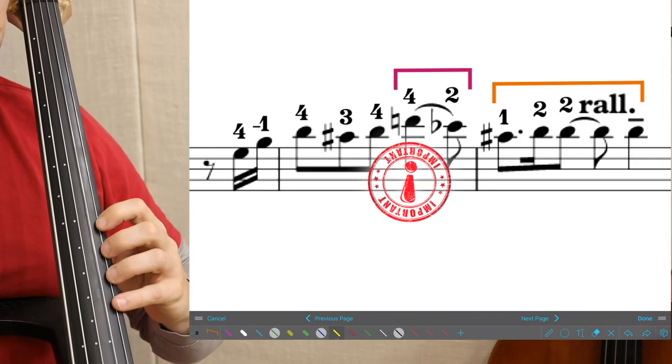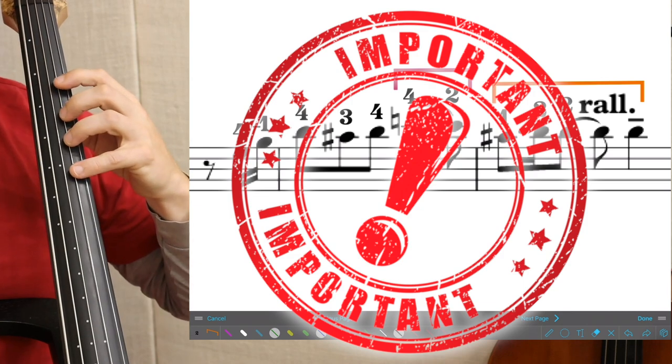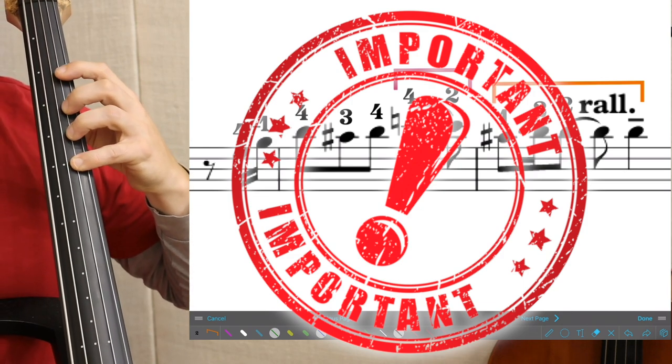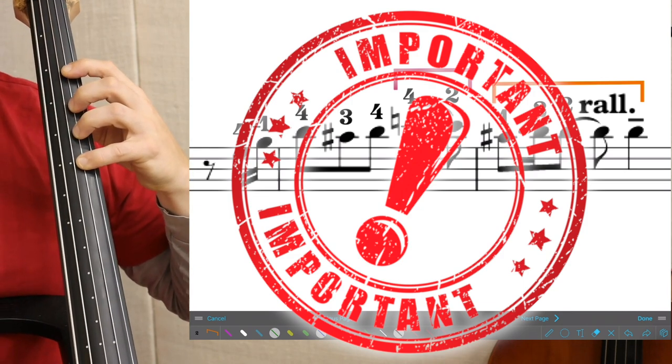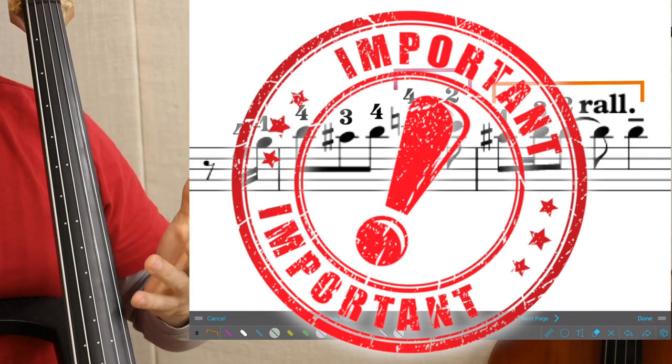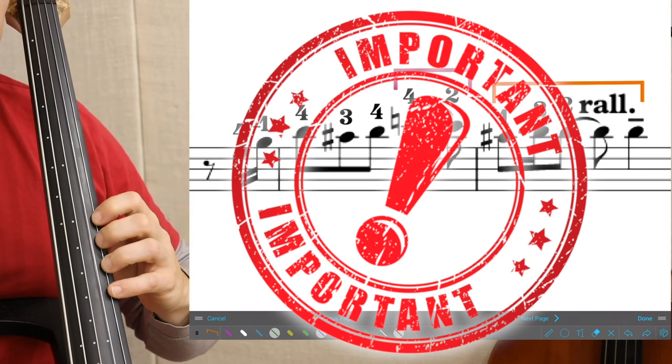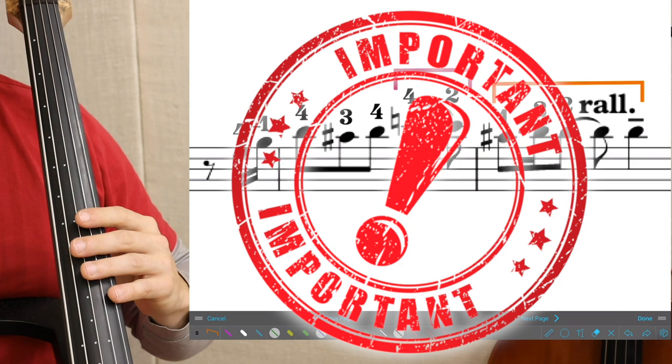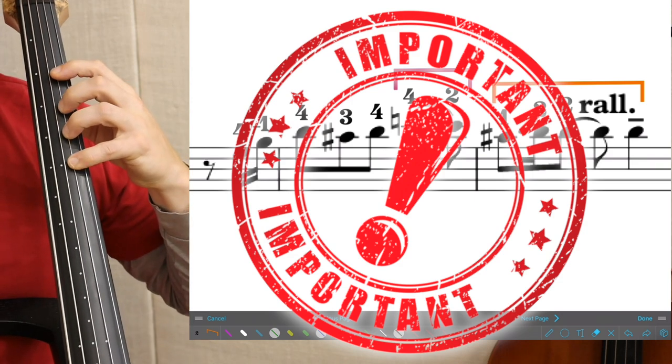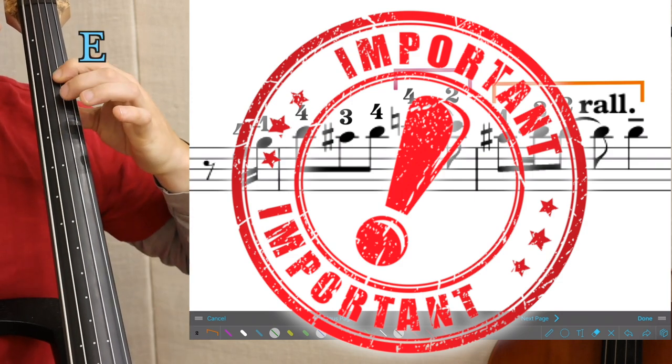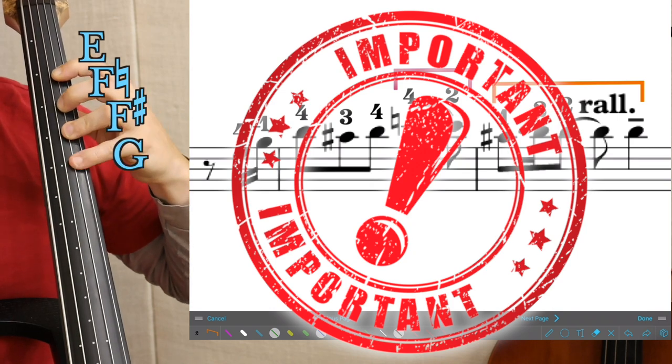The notes that are in fourth position, one string higher, correspond exactly with the notes that are here in first position, one string lower. So come here in the A string. We want to find out what those notes are. Well, here we have E, F natural, F sharp, G.